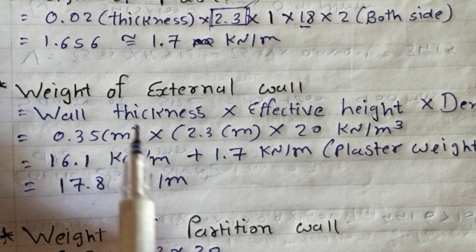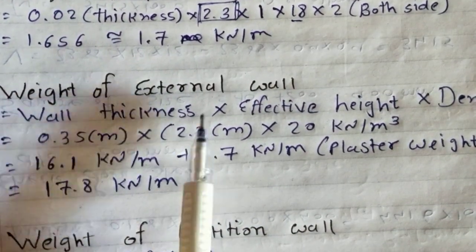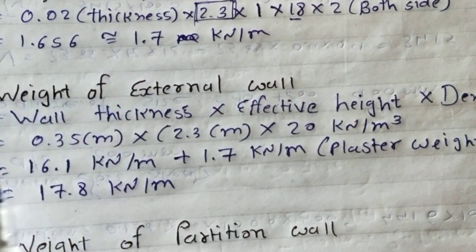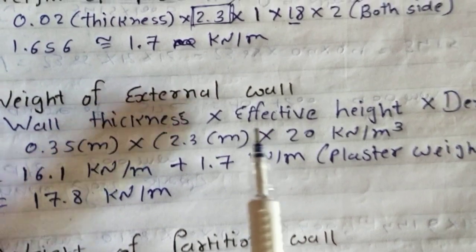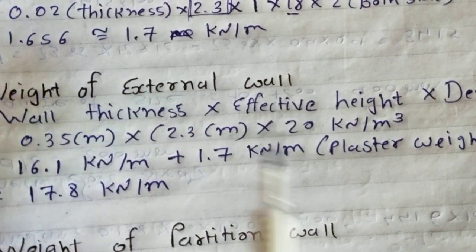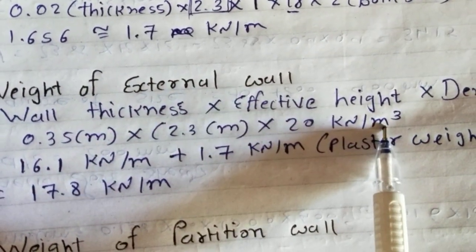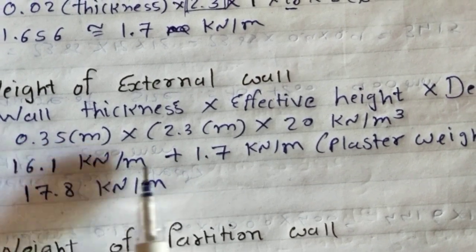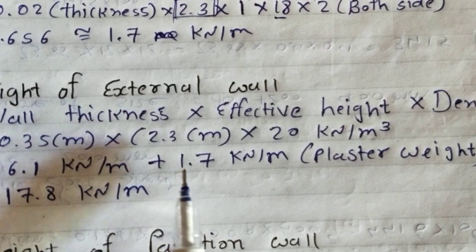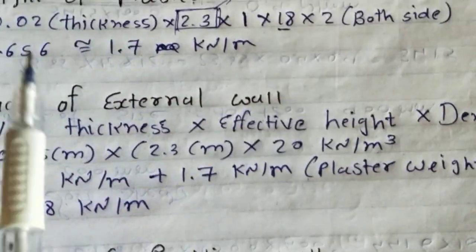Now we will evaluate weight of external wall. Wall thickness multiplies effective height multiplies density. Wall thickness is 0.35 as mentioned above, multiplies 2.3 meter, this is effective height of wall, and 20 is the density of wall. This is 16.1 kN per meter. This is the weight of external wall plus 1.7 kN per meter, this is the plaster weight which we calculated here.